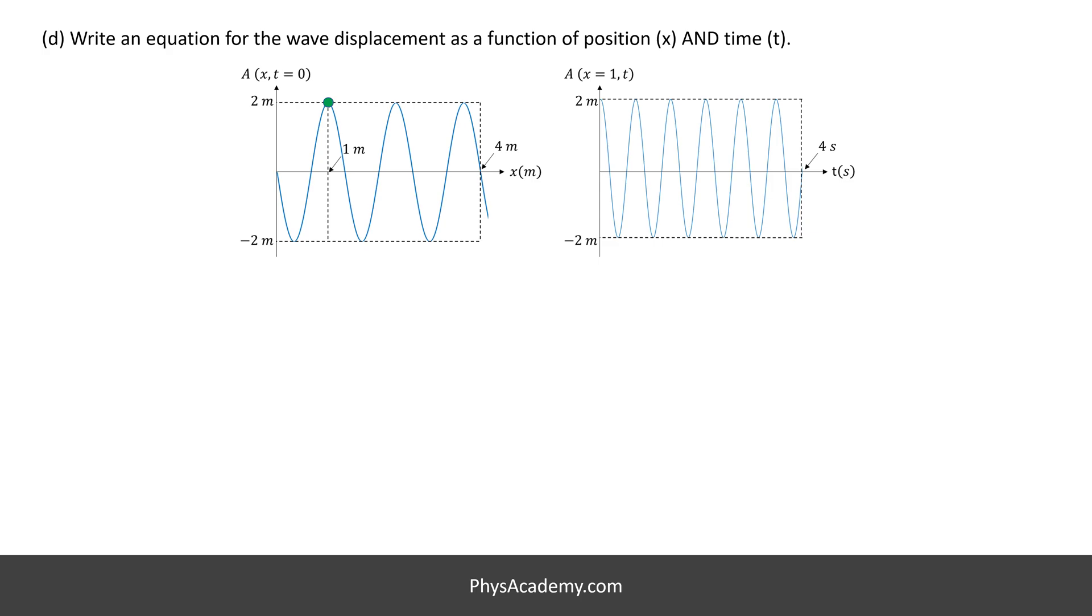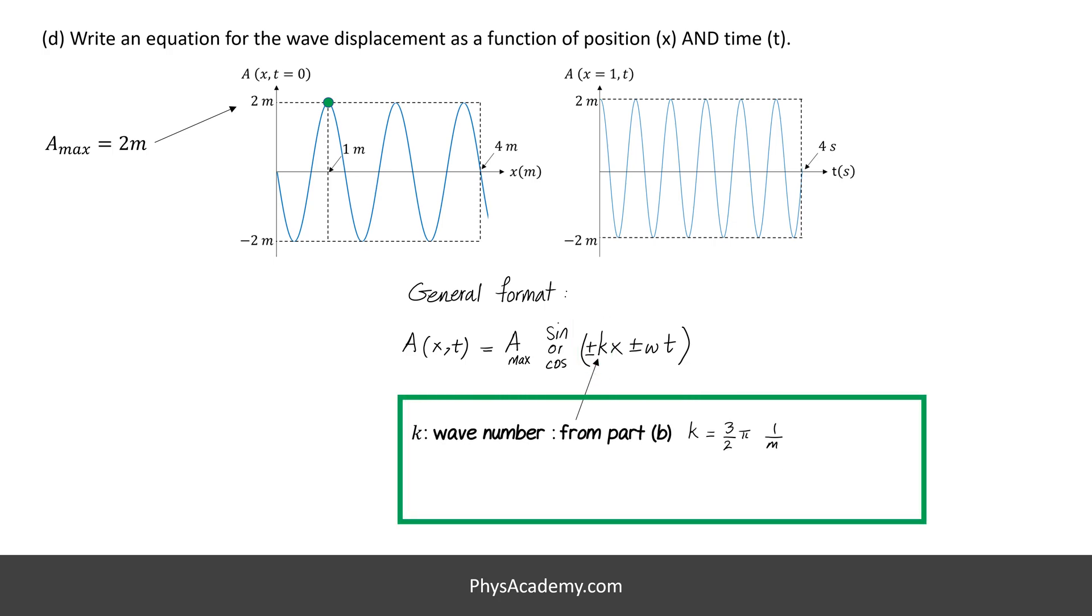In part D, we are asked to find the wave equation. The general format of a wave equation is this. Starting with the maximum amplitude or A max, it is 2 meters from both plots. Then K, the wave number, from part B, we know K is 3 pi divided by 2 inverted meters. For the sign of the wave number K, we check the snapshot plot on the left. We have a negative sine plot here, so K, the wave number, has to be negative.